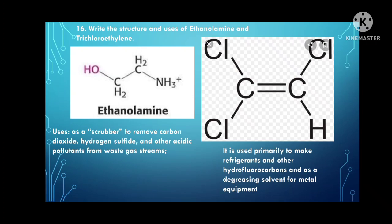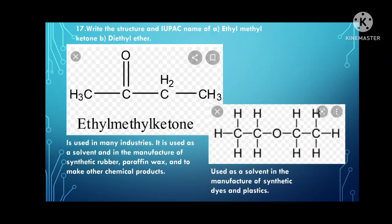Write the structure and uses of ethanolamine and trichloroethylene. Ethanolamine is used as a scrubber to remove carbon dioxide, hydrogen sulfide, and other acidic pollutants from waste gas streams. Trichloroethylene is primarily used to make refrigerants and other hydrofluorocarbons, and as a degreasing solvent for metal equipment.